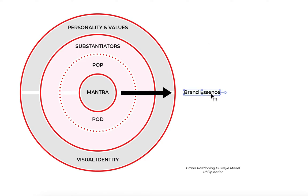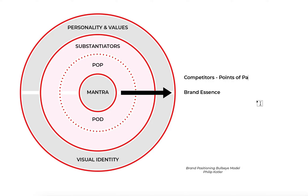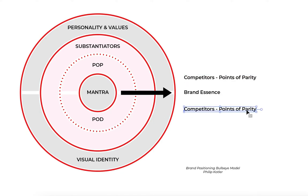Once you have identified that brand essence, you also want to identify your competitors — the industry competitors that you have in the market. After you know your competitors, you start to find the PoP, which is your Point of Parity — what are the similarities between you and your competitors.